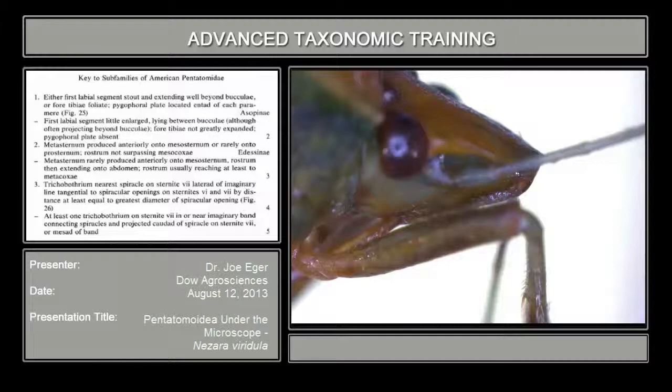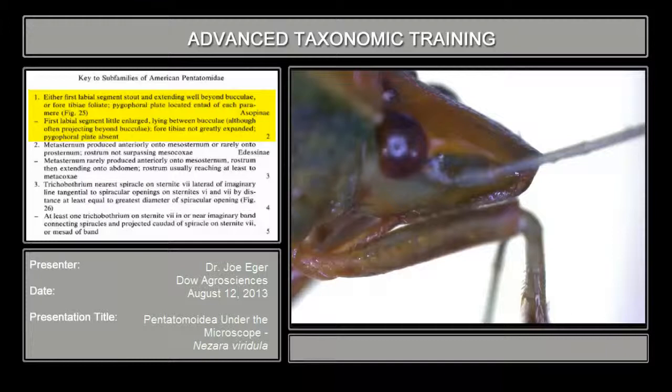Pentatomids — we're going to now look at the key to subfamilies of American Pentatomidae on page 197 of the same paper, Rawlston and McDonald 1979. First couplet: either the first labial segment stout and extended well beyond the bucculae, or fore tibia foliate — or the first labial segment lying between the bucculae with fore tibia not dilated or foliate. You can see the rostrum lies between the bucculae on this bug, so this is obviously not an asopine or predaceous pentatomid.